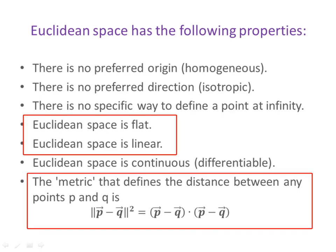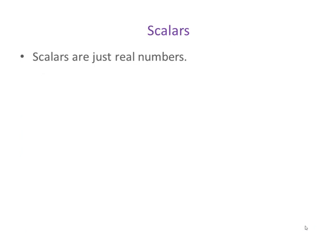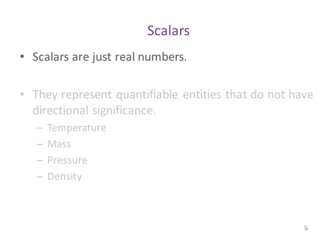Okay, let's move on to talk about scalars, vectors, and tensors. Scalars are nothing but real numbers. They represent quantifiable entities that do not have any directional significance. Examples of things we can use scalars for are measures like temperature, mass, pressure, density, and so on. Notice that in each of these cases, there's no sense in which one direction is preferred over the other. They're just general real number values.